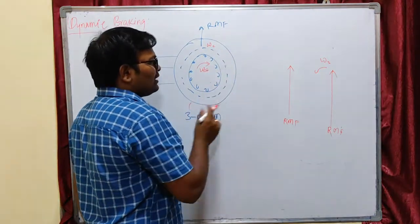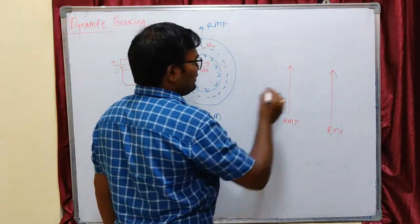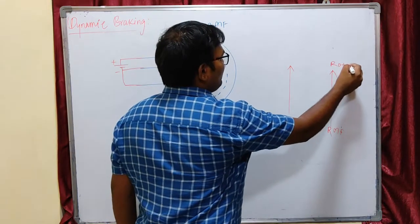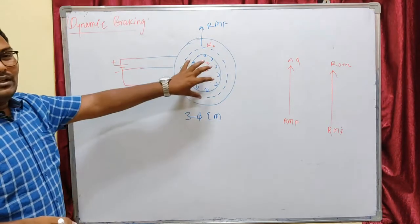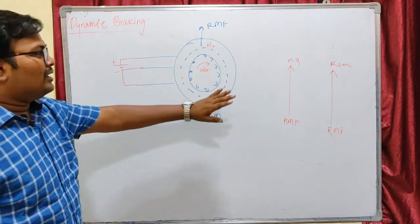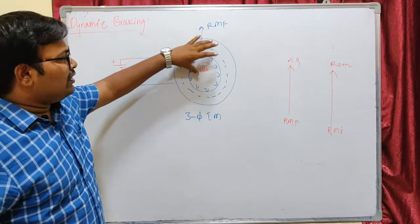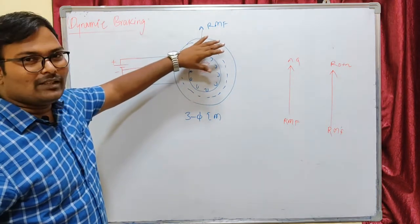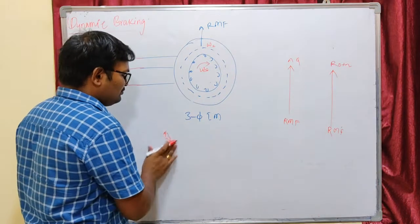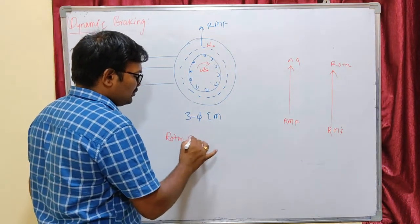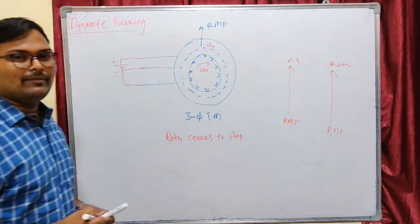As the DC flux cuts with the rotor conductors, there will be a unidirectional magnetic field produced in the rotor also — this is in the rotor, this is in the air gap. This will bring the rotor to zero speed. Because the rotor was rotating due to the interaction between the air gap and rotor rotating magnetic fields, now there is no interaction between them and no relative speed, so the rotor comes to a stop. This is dynamic braking.